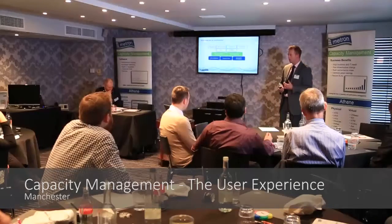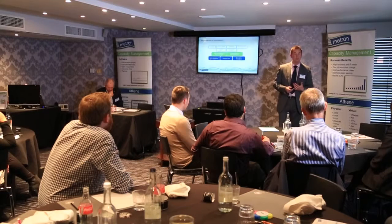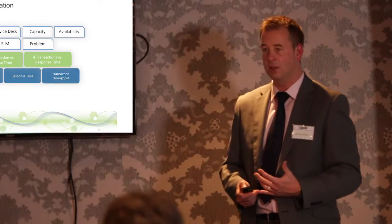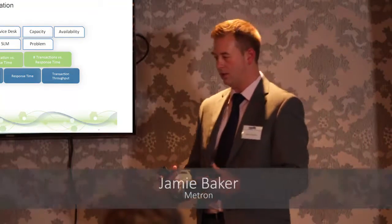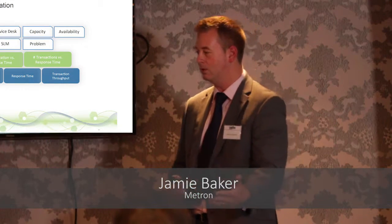Here's another example of correlation. You can see at the bottom there we have our CPU, so we've got that information from our component. We've got our response time information from our service applications, and we've got some transaction throughput information from the business. So we can actually get some of those business metrics and start to correlate — what's our CPU against our response time, and what are the numbers of transactions against response times?